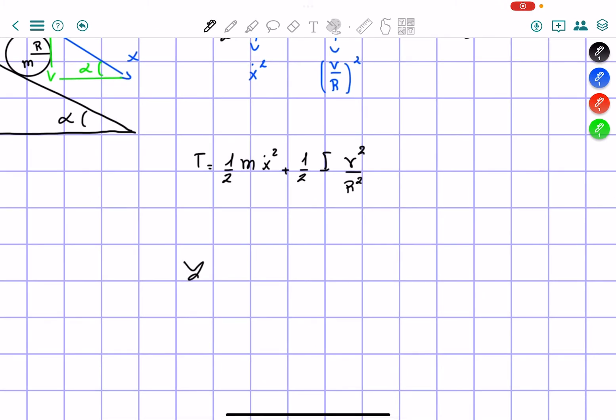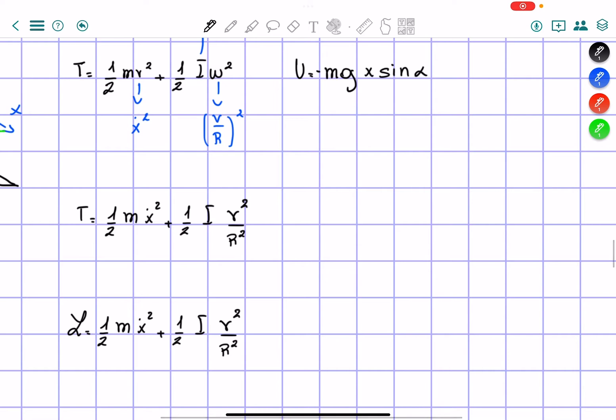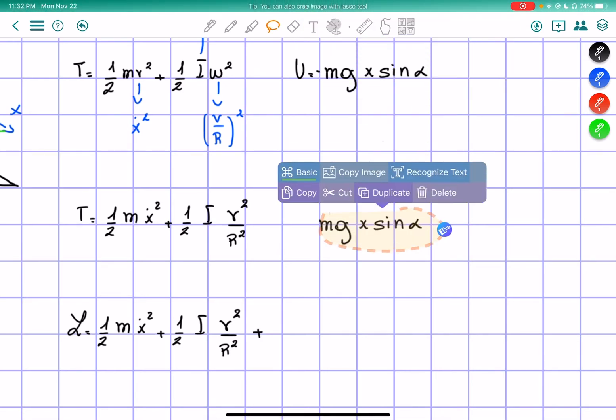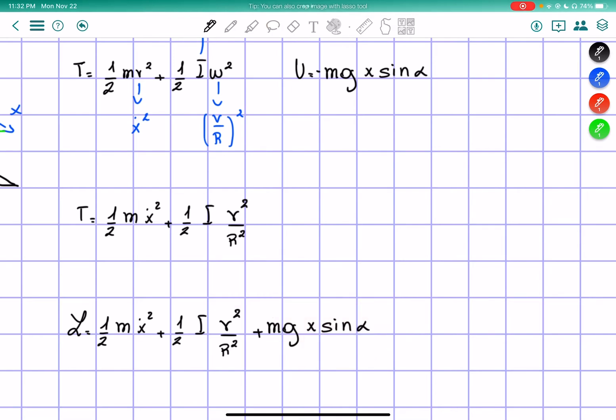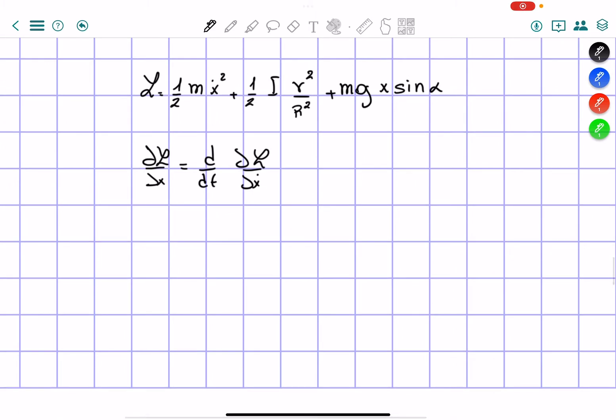So now our Lagrangian is going to equal our kinetic energy minus our potential energy. It's going to be a positive value here minus the negative value. So if we find the derivative of our Lagrangian in terms of x equals d/dt of the Lagrangian in terms of x dot. Let me write this: v equals x dot.